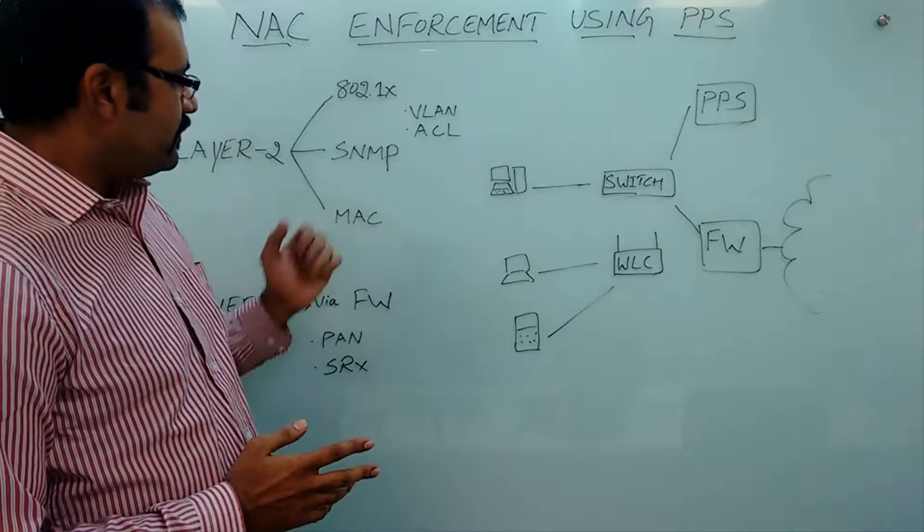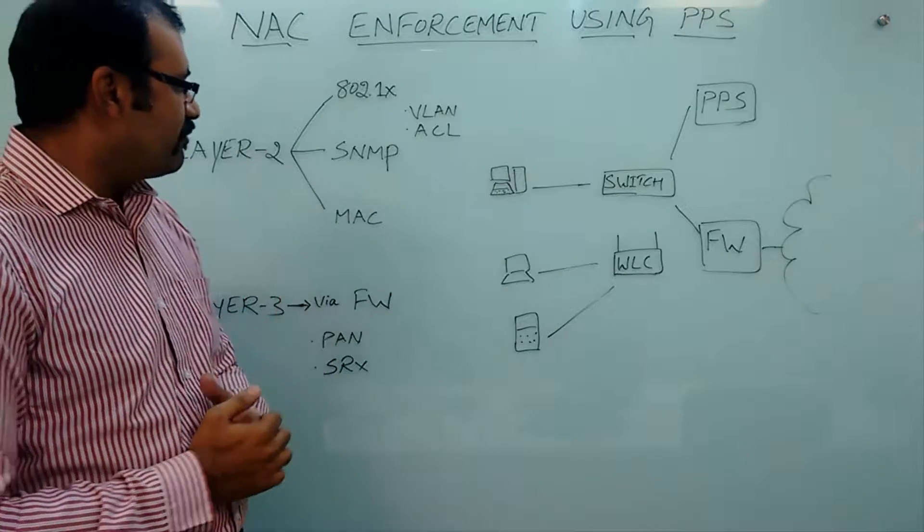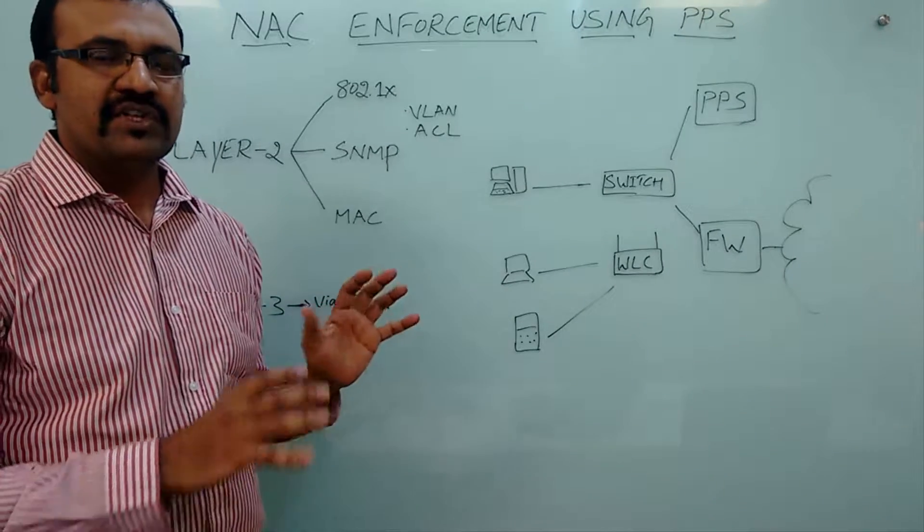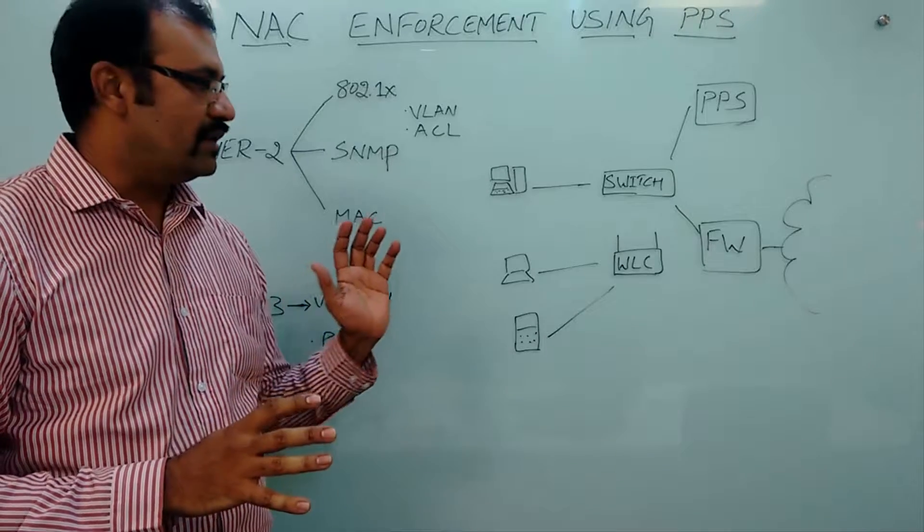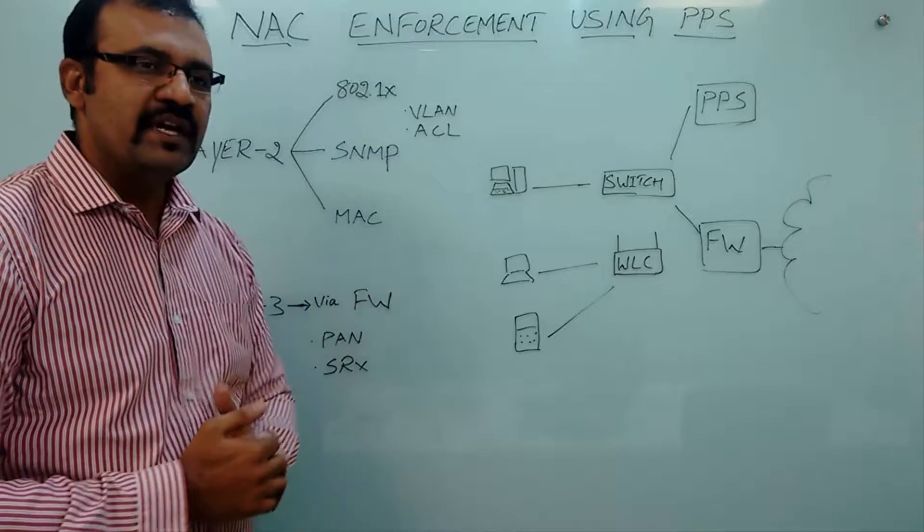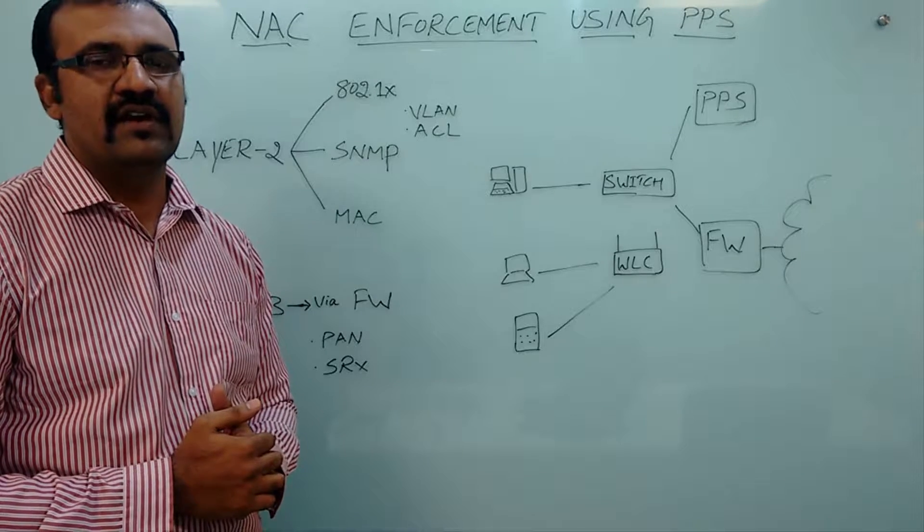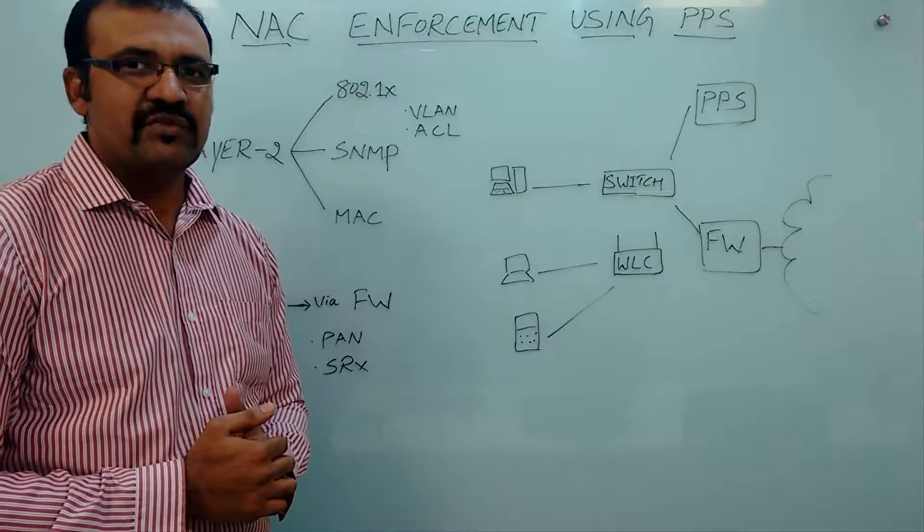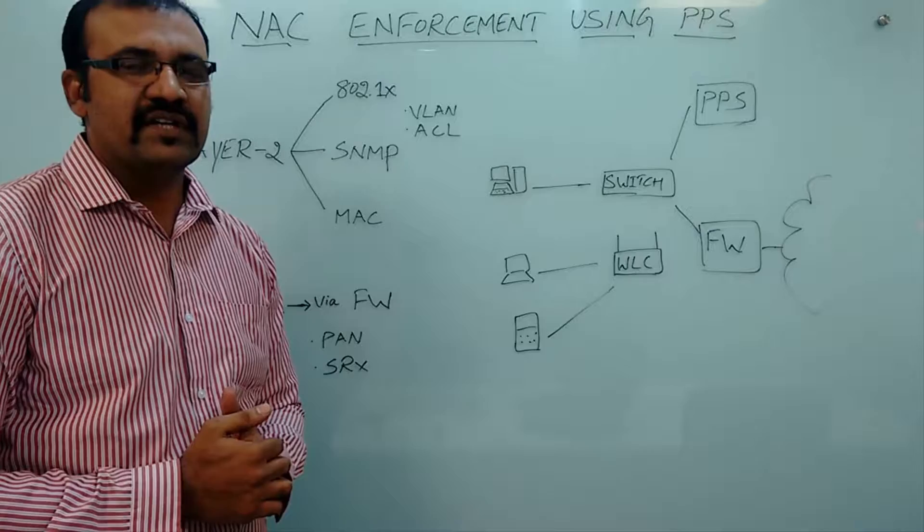The third layer 2 enforcement method is MAC-based, which is based on the endpoint physical address. This helps especially in case of unmanaged devices like printers and IP phones.